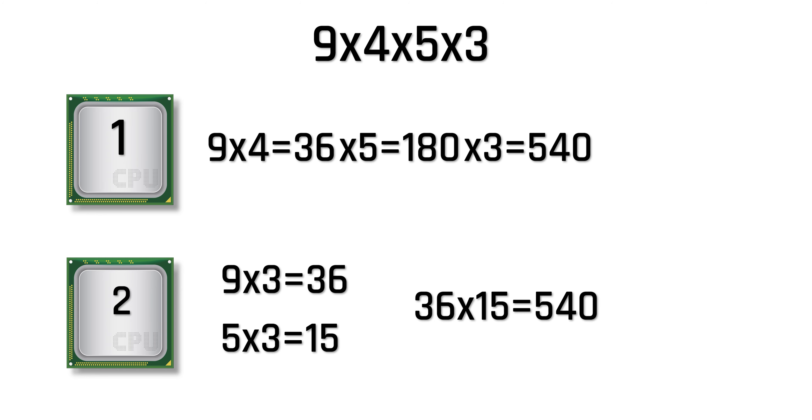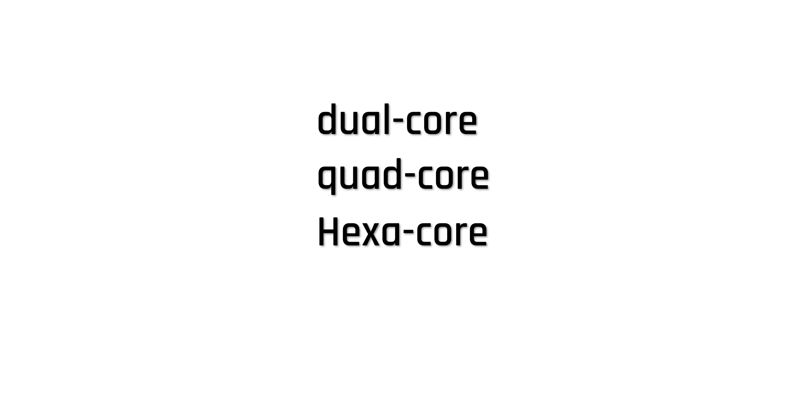Then at the end it multiplies both results: 36×15=540. This is a very simple example, but for the purpose of this video it serves well. A processor with two cores is called a dual-core processor; four cores, a quad-core; six cores, hexa-core; eight cores, octa-core — and so on and so forth.